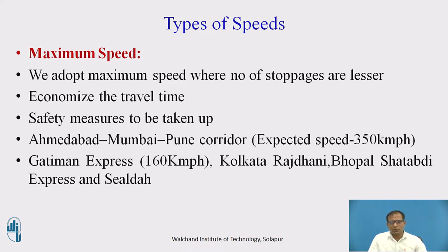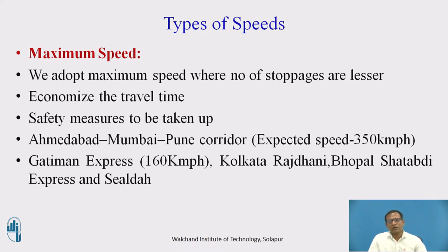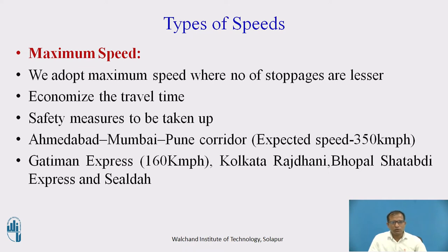We do not always have to go with the average speed — sometimes we need to go with a higher, maximum speed, where the number of stoppages are lesser. If there are more stations, it is no use claiming maximum speed, because you would need to accelerate and then immediately decelerate again. So only where stoppages are fewer can we accelerate to maximum speed. We go with maximum speed to reduce travel time.